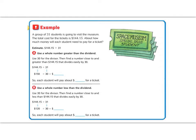In the example it says, a group of 31 students are going to visit the museum. The total cost of the tickets is $144.15. About how much money will each student have to pay? Well, we know that about means that we need to estimate. So we're going to use compatible numbers and estimate $144 divided by 31.